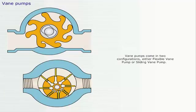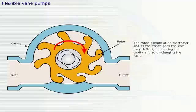Vane pumps come in two configurations, either flexible vane pump or sliding vane pump. The rotor is made of an elastomer, and as the vanes pass the cam, they deflect, decreasing the cavity and so discharging the liquid.